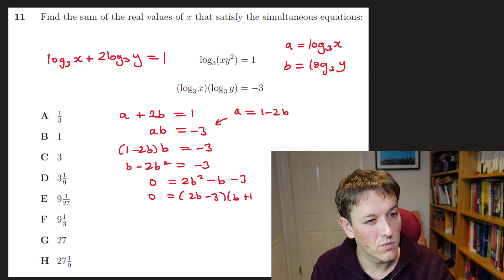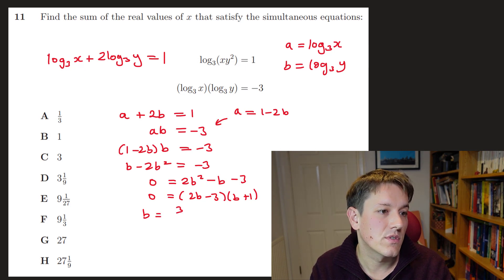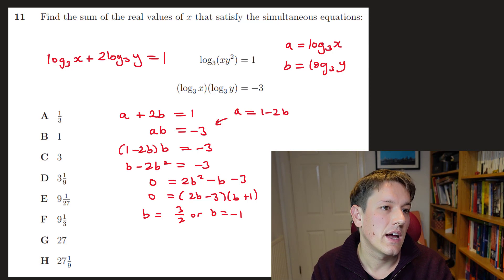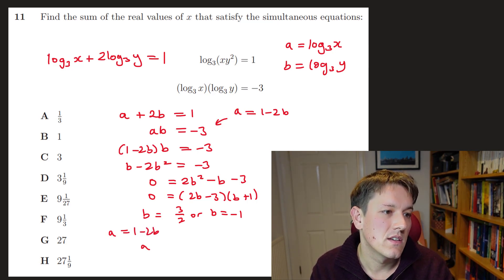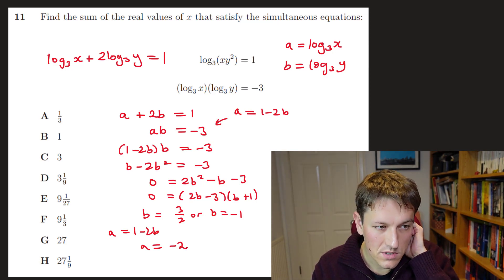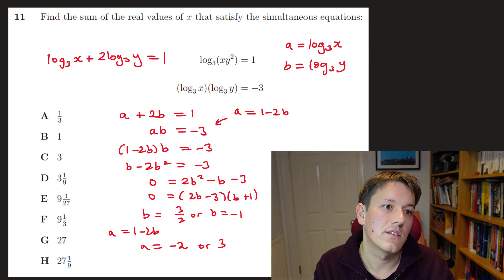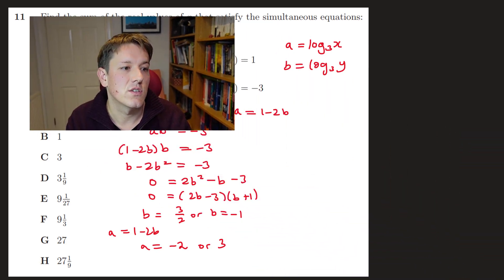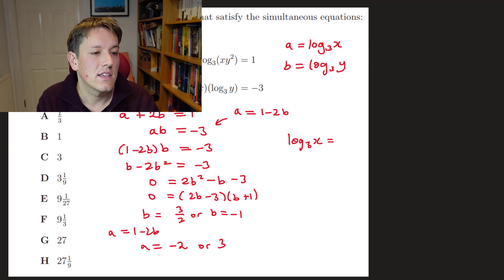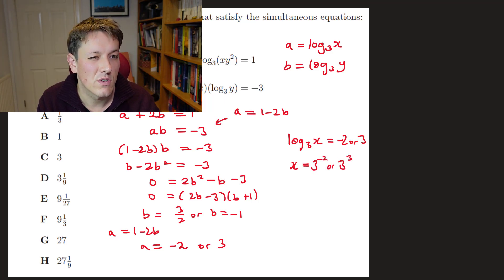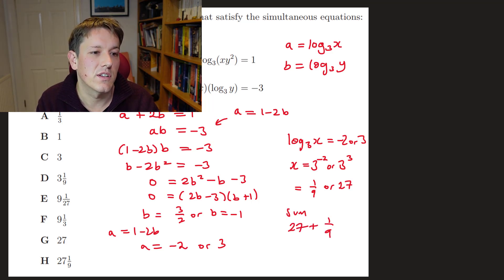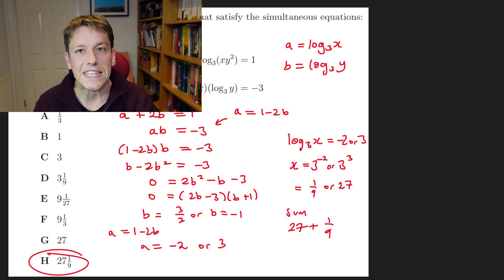Factorizing gives (2b − 3)(b + 1), so b = 3/2 or b = −1. Then a = 1 − 2b gives a = −2 or a = 3. Since a = log₃(x), we get x = 3^(−2) = 1/9 or x = 3³ = 27. The sum is 27 + 1/9, which is 27 and 1/9, so the answer is H.